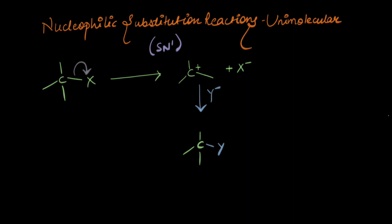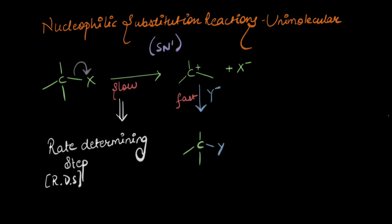So do these two steps occur at the same pace? Or is one of them quicker and one of them slower? In the laboratory, chemists tried various ways to understand which of the two steps was quicker, and the result was the second step was faster than the first one. The breaking of the C-X bond was slower, and the slowest step is called the rate-determining step. What do I mean when I say rate-determining step? Let's take an example to understand this.